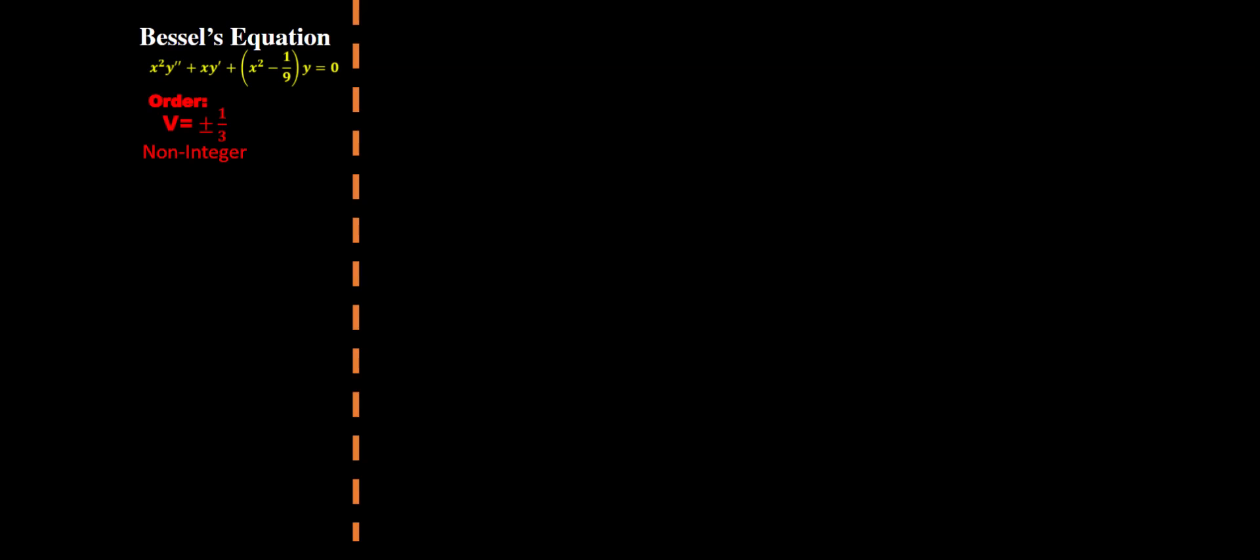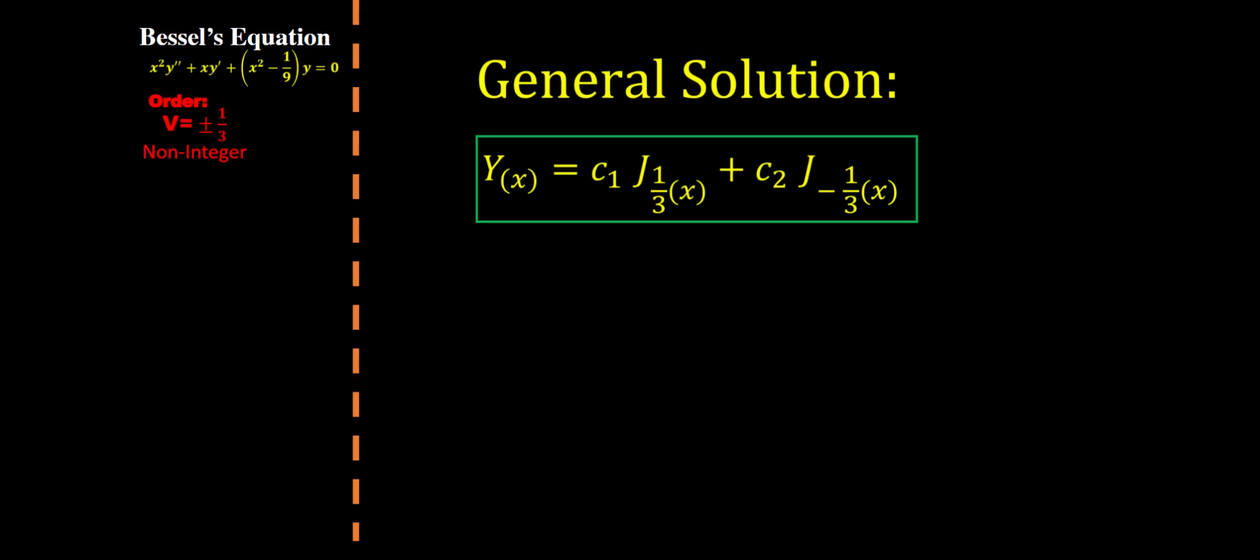Since we are working with non-integer, Bessel worked it out that the general solution can be written as we can see here. The c1 and c2 are two constants and the two j functions are Bessel functions of the first kind. Since our order is non-integer, our two j functions will be linearly independent. The first j is one third and the second j is with negative one third.